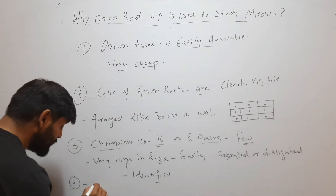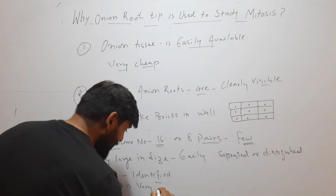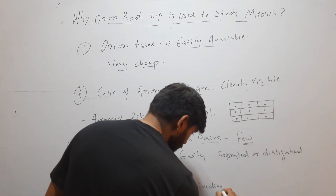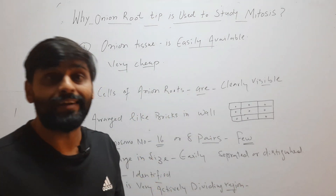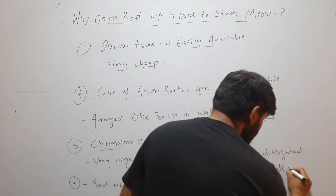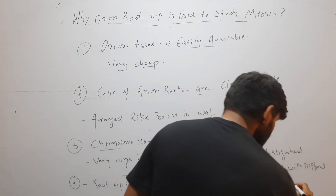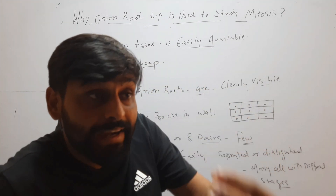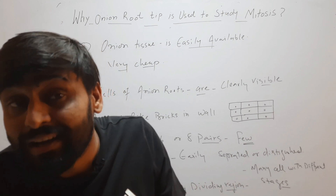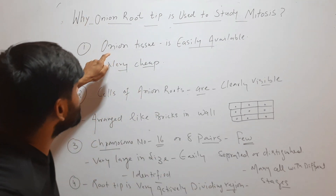The last reason is that the onion root tip is a very actively dividing region. Because it is very actively dividing, you will find many cells at different stages of mitosis. In a limited space within the root tip, you will find some cells at prophase stage, some at metaphase stage, some at anaphase stage, and some cells at telophase stage.